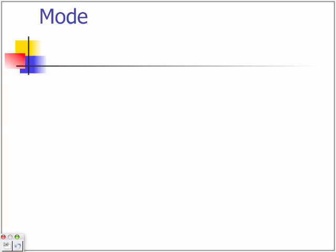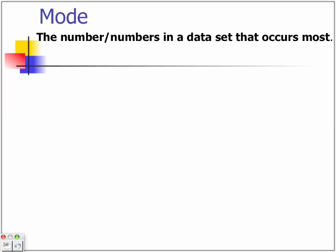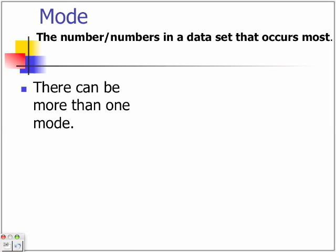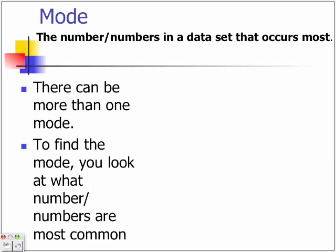And the mode. The number or numbers in the data set that occurs the most is the mode, and there can be more than one. To find the mode, you just look at what number appears the most.